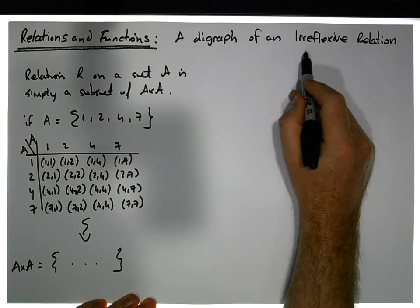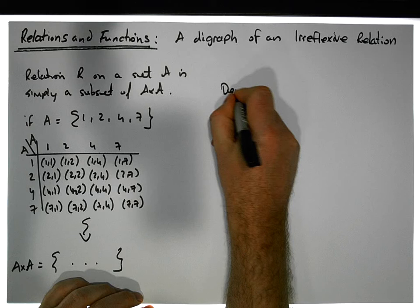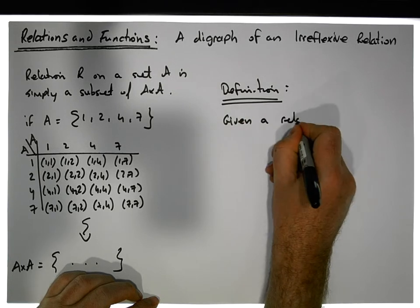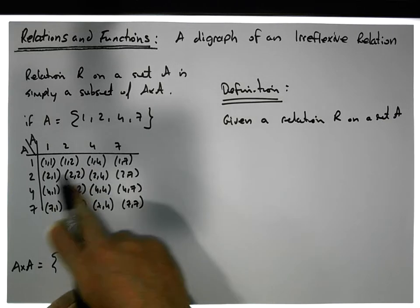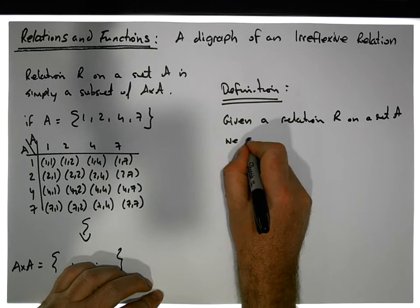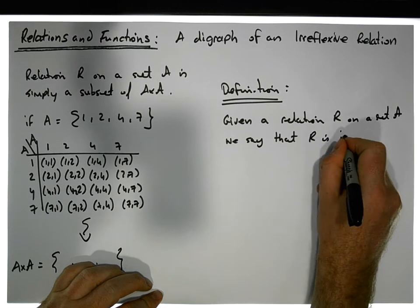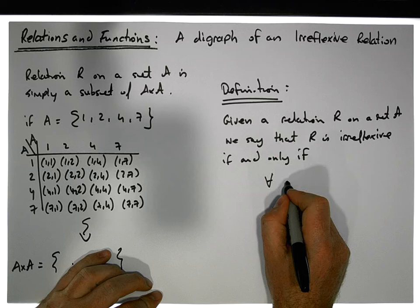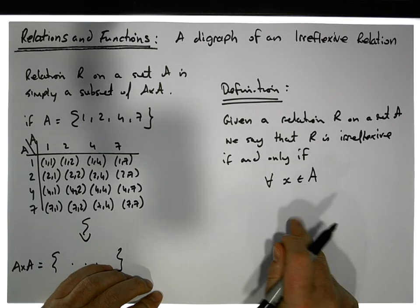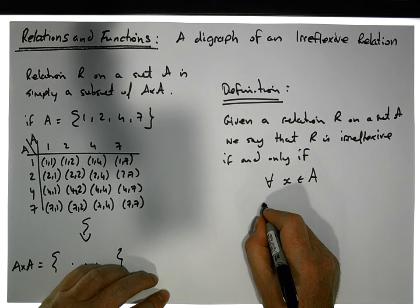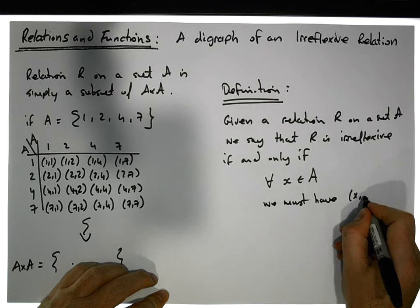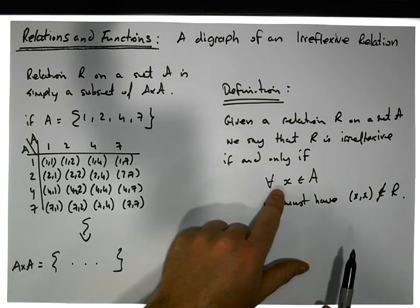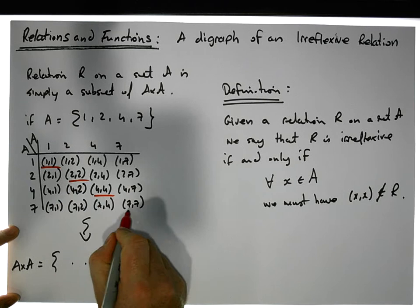Now let's look at what an irreflexive relation is. Given a relation R on a set A — that is, some subset of the cross product — we say R is irreflexive if and only if for each and every x that is an element of A, the pair (x, x) is not contained in the relation R.